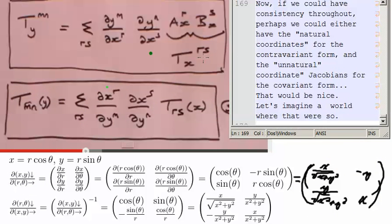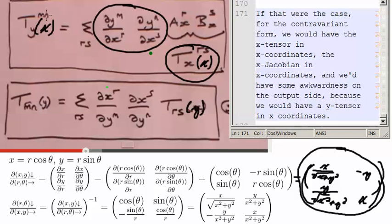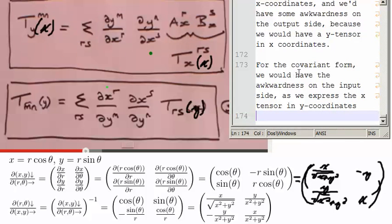Now, if we could have consistency throughout, perhaps we could either have the natural coordinates for the contravariant form, and the unnatural coordinates for the covariant form. That would be nice. Let's imagine a world where that were so. If that were the case, for the contravariant form, we would have the x tensor in x coordinates, we would have the x Jacobians in x coordinates, and we'd have some awkwardness on the output side, because we would have a y tensor in x coordinates. For the covariant form, though, we would have some awkwardness on the input side, as we would have to express the x tensor in y coordinates.